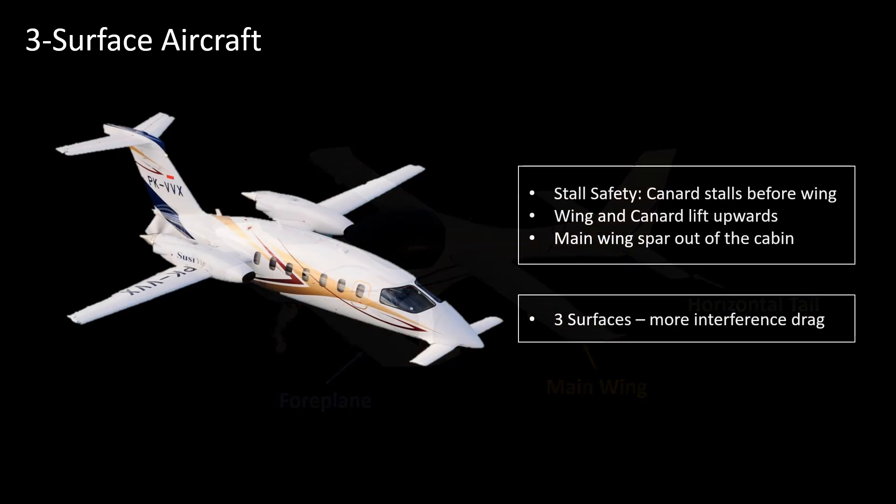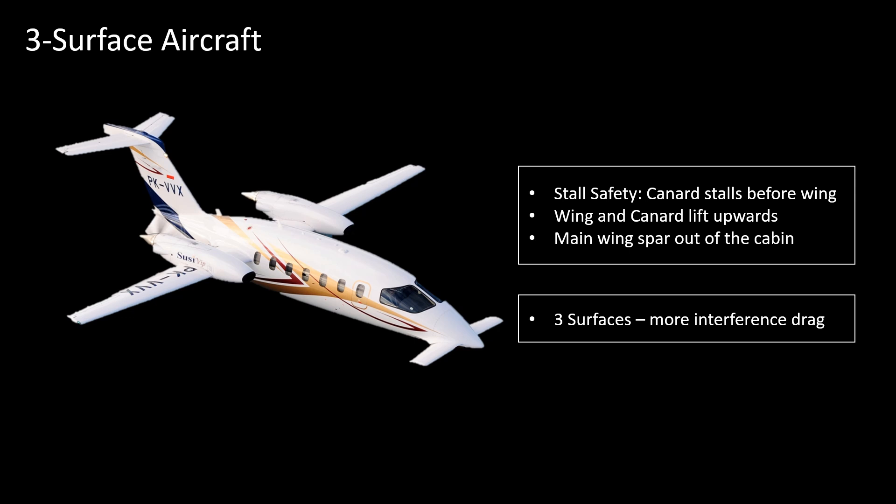Just like canards, they have the advantages of increased safety and shared load. Another advantage is that the main wing spar may be placed out of the way, leaving more space in the cabin. The disadvantage of the three-surface design is the increased interference drag.